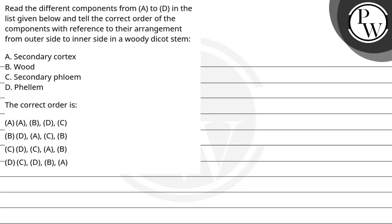Hello bachon, let's see this question. The question says, read the different components from A to D in the list given below and tell the correct order of the components with reference to their arrangement from outer side to the inner side in a woody dicot stem.